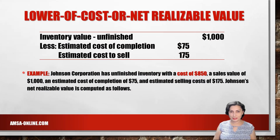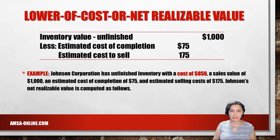Let's look at an example. Johnson Corporation has unfinished inventory with a cost of $850, a sales value of $1,000, an estimated cost of completion of $75, and estimated selling costs of $175.